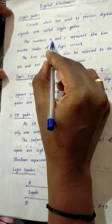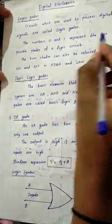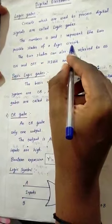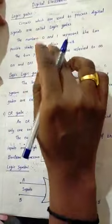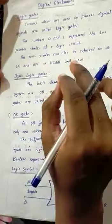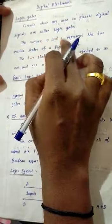The numbers 0 and 1 represent the two possible states of a logic circuit. Logic gates le namakke rindu numbers matti me pain budu, 0 and 1.